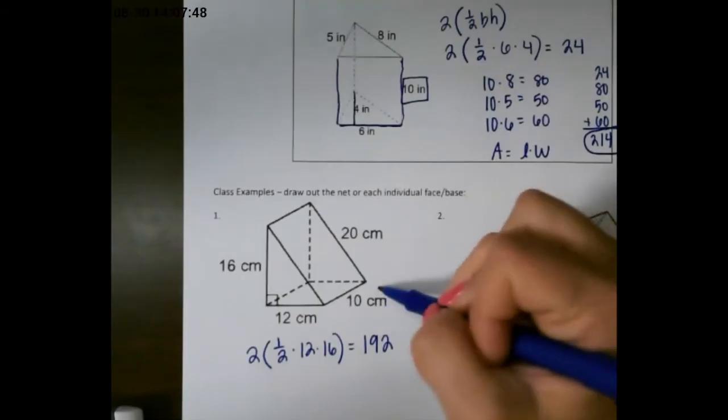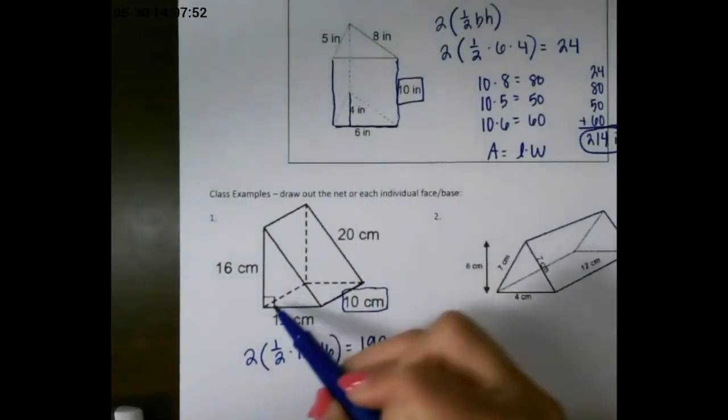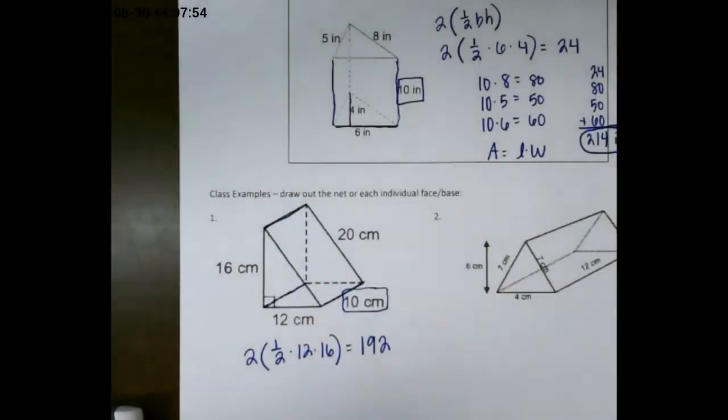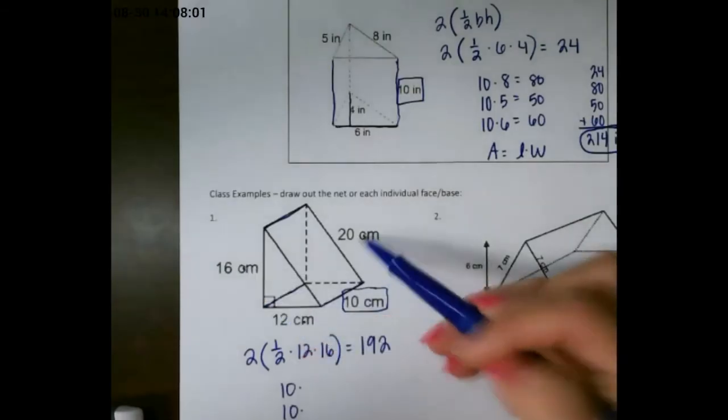Now the length of all three of my rectangles is going to be 10. That's going to be this line, and it's the same for all three rectangles. So I have 10 for each of those, and again, our widths come from our three sides of our triangle.